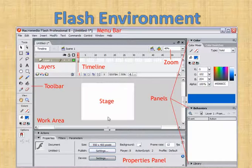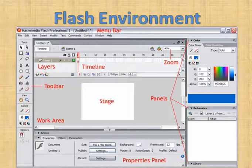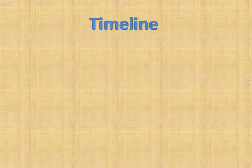So just for now, we have seen what a menu bar is, what layers are, the toolbar, working area, timeline, how to zoom, what the stage is, what the different panels are, and the properties panel. Let us move ahead and look at the timeline.